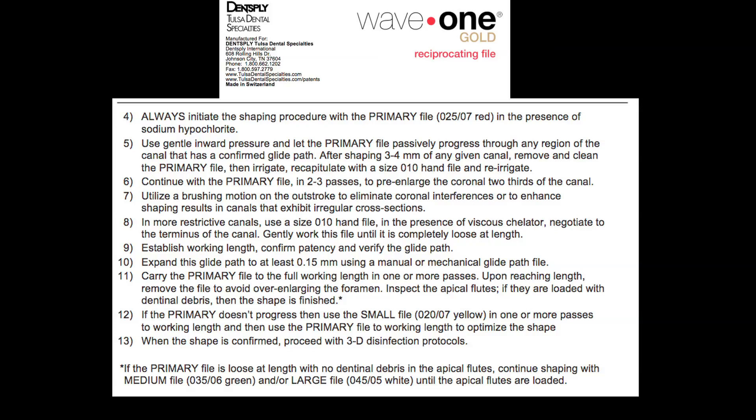We remove WaveOne Gold, observe the instrument, and clean the dentinal debris in the flutes of the instrument. We irrigate — you will see that the needle will go deeper and deeper. Then we take the instrument that established working length and ascertain that we have not blocked ourselves. It goes all the way to working length. Then we irrigate again and repeat the same process with WaveOne Gold until we reach working length.